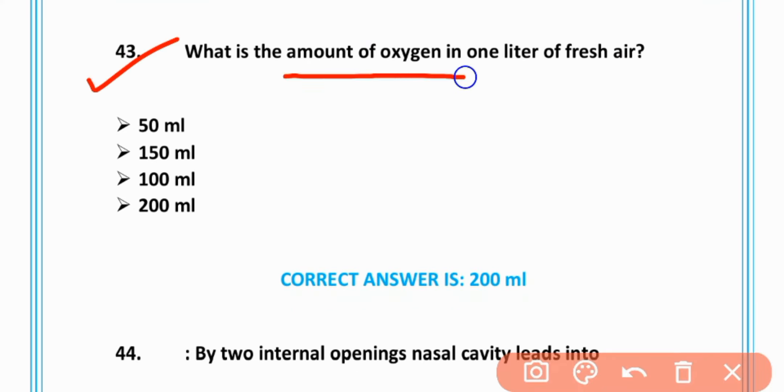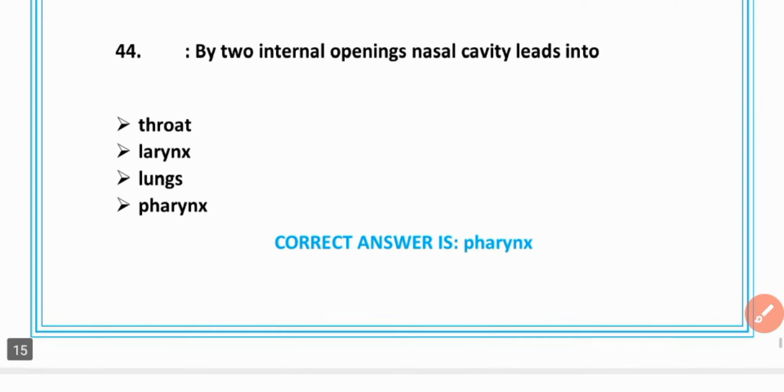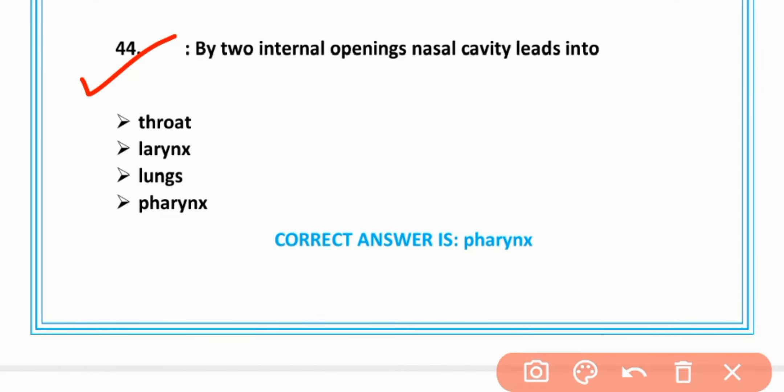MCQ number 43: The amount of oxygen in one liter of fresh air is 200 ml. MCQ number 44: By two internal openings nasal cavity leads into pharynx, option D is correct.